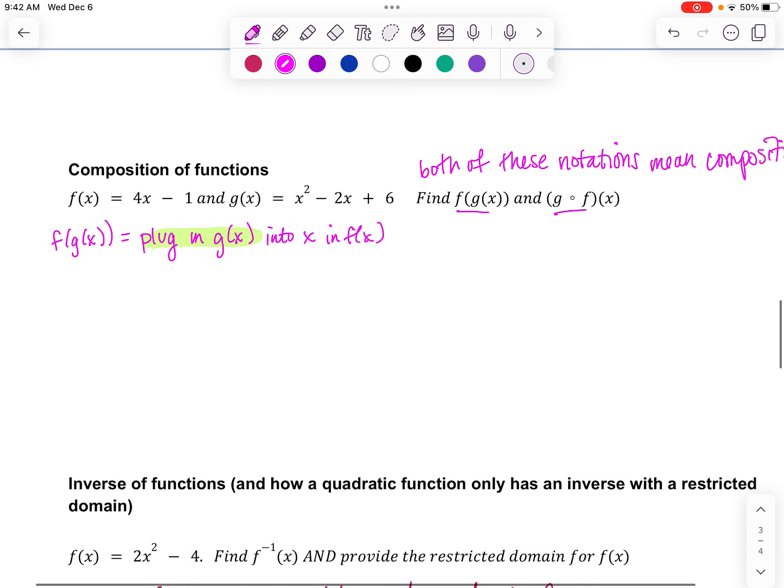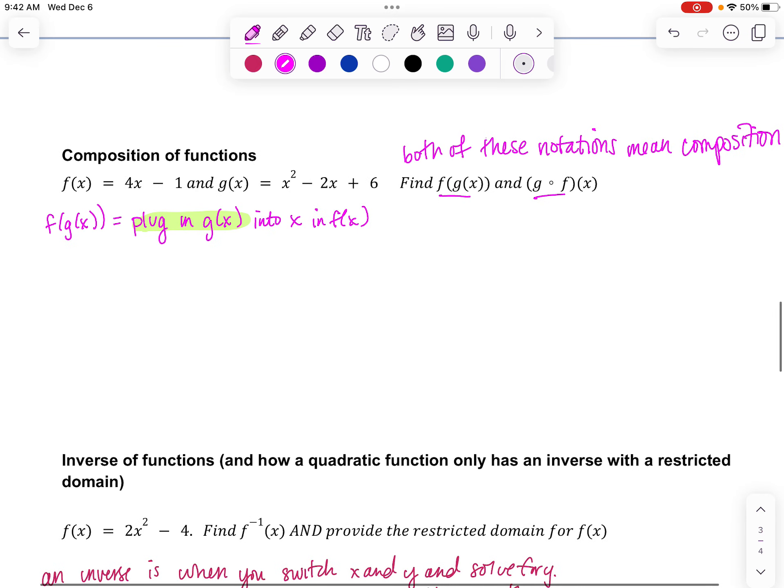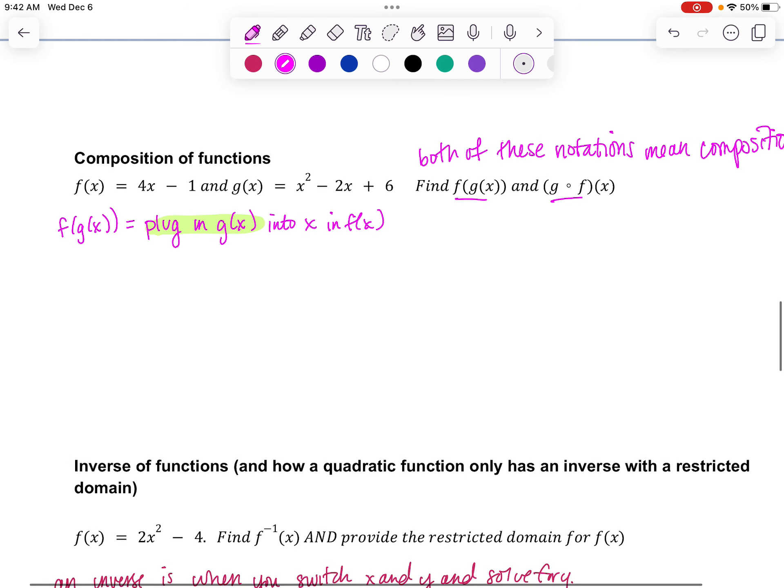Composition of functions and inverses are the last two topics that we're going to go over. So first things first, this notation that we see here, f of g of x and this g of f of x, both of those notations mean the same thing. They both mean composition of functions. They mean you put one function inside the other.